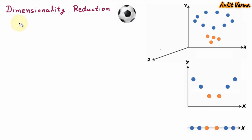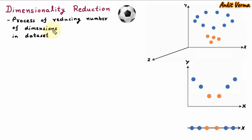Hello everyone, my name is Ankit Verma. Today we are learning dimensionality reduction. Dimensionality reduction is the process of reducing the number of dimensions in a dataset. Dimension means features.